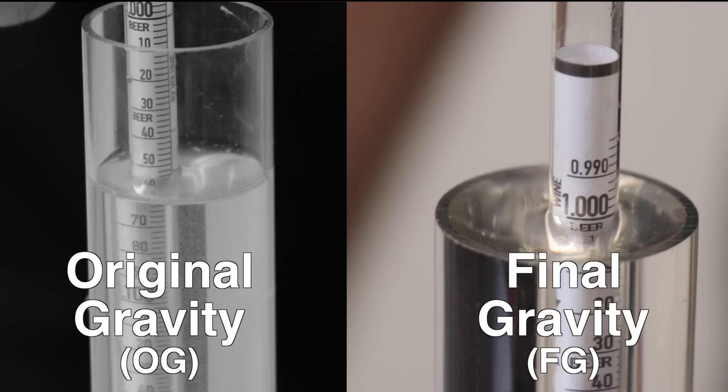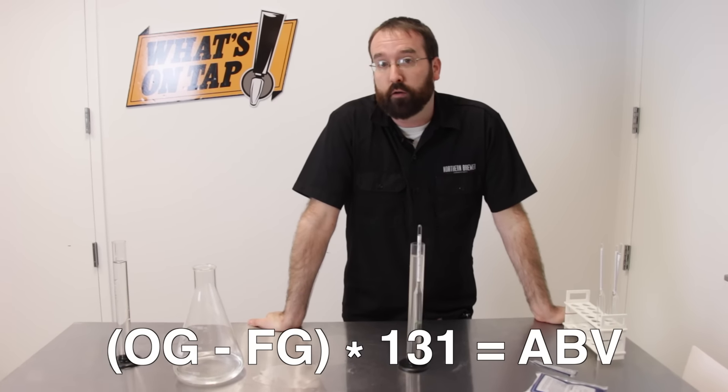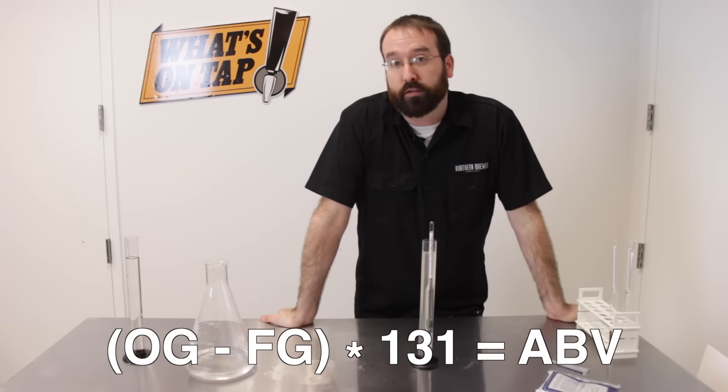Now, after everything is all said and done, you take your initial reading and your final reading, and you subtract your final gravity from your original gravity and multiply by a constant, and that will give you your alcohol content.